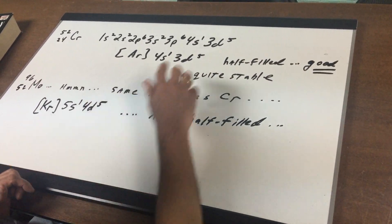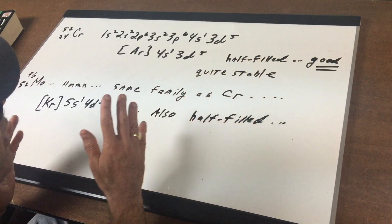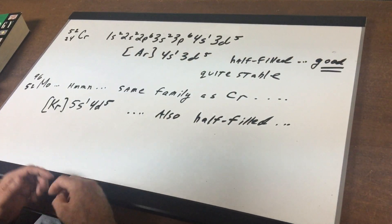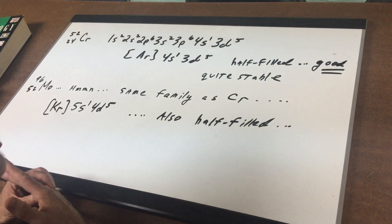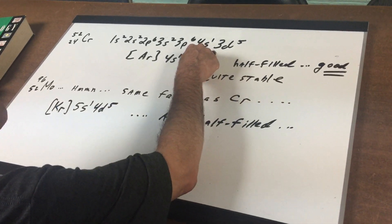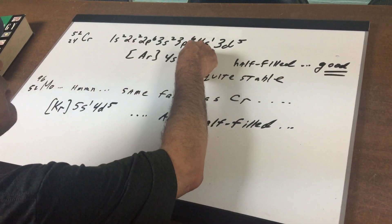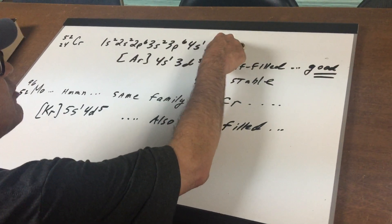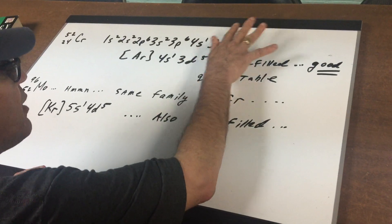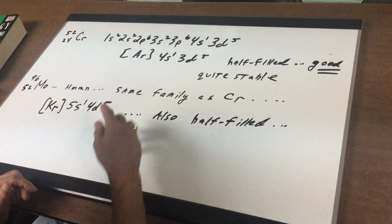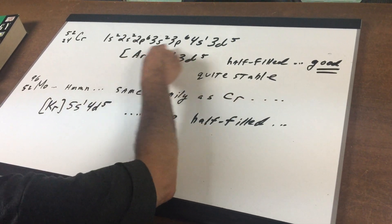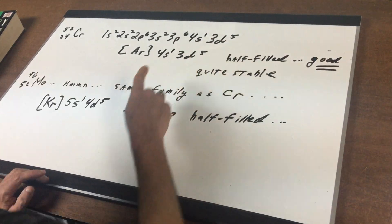Why a D5? Because a D5 would mean that half of those orbitals are filled up. Half filled is good — it's quite stable. Not as good as a D10, but it's quite stable. Even if I needed to sacrifice an electron from a 4S2 subshell to promote it into a higher level, that does cost energy — costs something — but the amount of stability gained is worth it. So if I condense this, the argon configuration gives us 4S1 and 3D5.